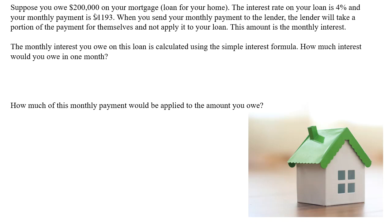Suppose you owe $200,000 on your mortgage. The interest rate on your loan is four percent and your monthly payment is $1,193. When you send your monthly payment to the lender, the lender will take a portion of that payment for themselves and not apply it to the loan or to the amount that you still owe. This amount that the lender takes is the monthly interest — the cost of borrowing money from the lender.